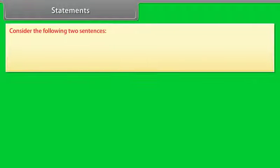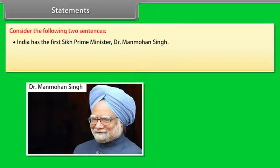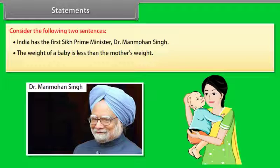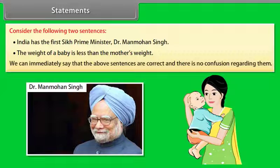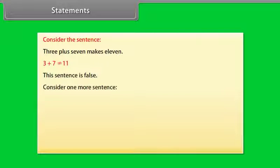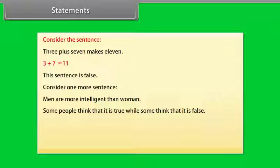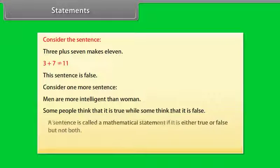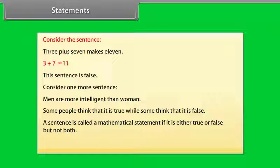Statements. Consider the following sentences: India has the first Sikh prime minister, Dr. Manmohan Singh; and the weight of a baby is less than the mother's weight. These sentences are correct. Now consider: 3 plus 7 makes 11 — this is false. And: Men are more intelligent than women — some think it is true, some think it is false. A sentence is called a mathematical statement if it is either true or false, but not both.